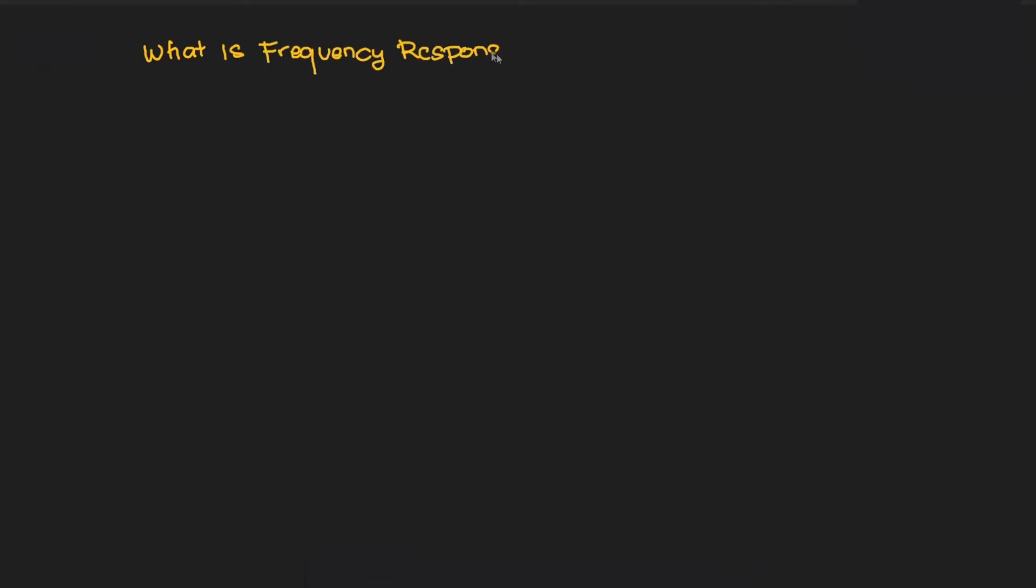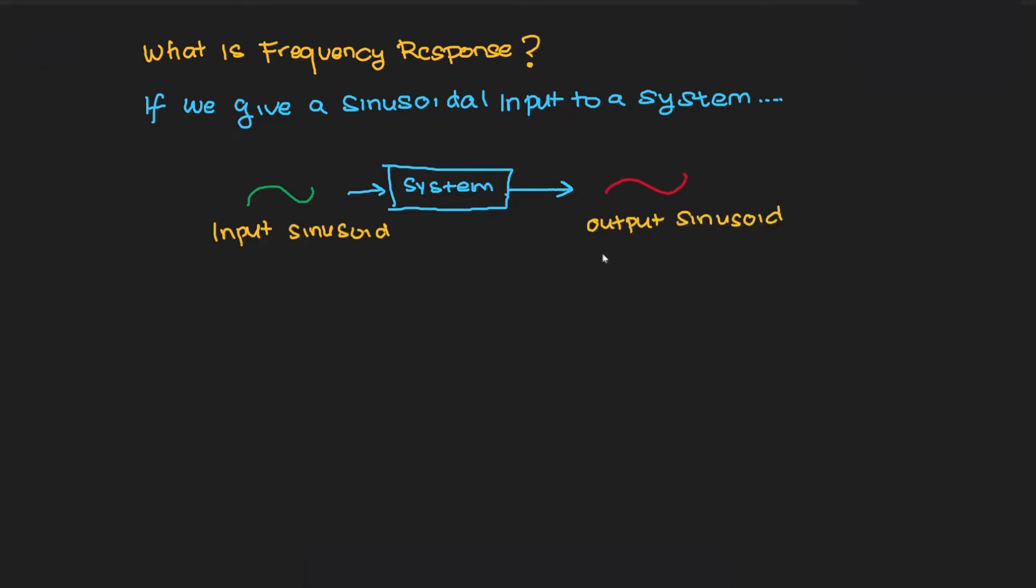The simplest way to define Frequency Response is the change of amplitude and phase of a sinusoidal wave as an input of a system to the system's steady-state output response. In other words, we will analyze the difference between an input sine wave and its output response, which will also be a sine wave.